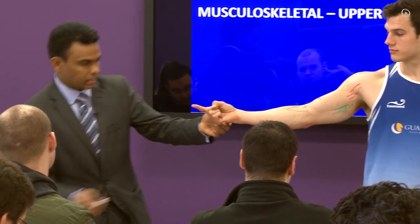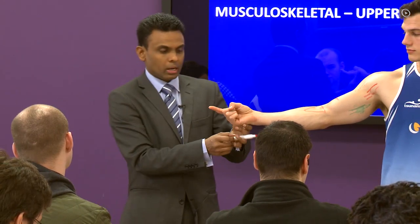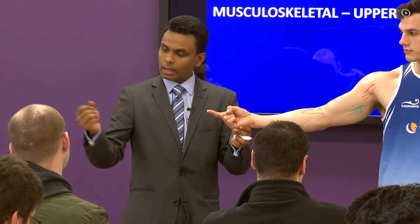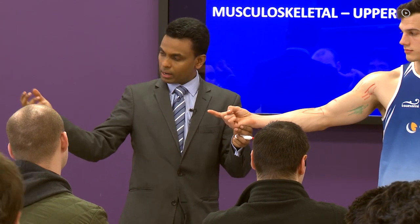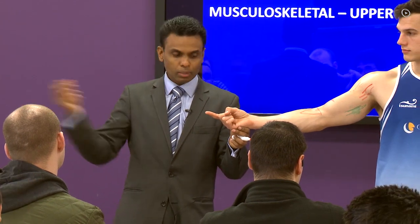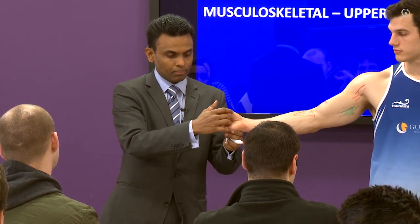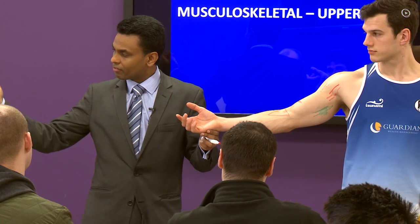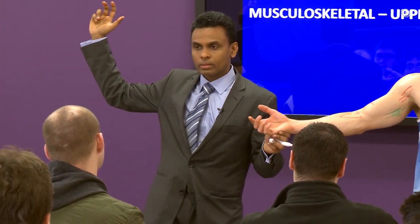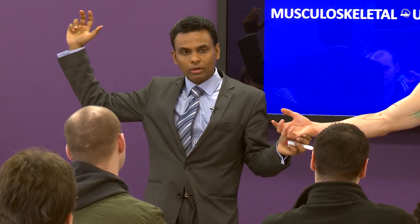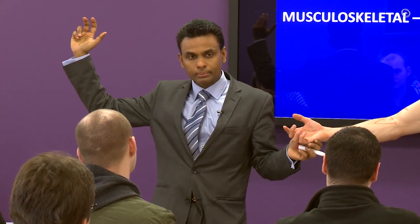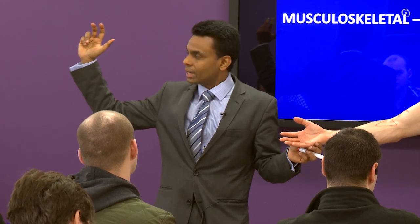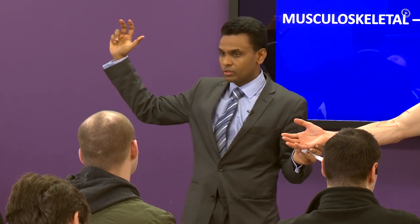In a child you can't ask them to make a fist, so that's why it presents in that position. But in an adult, if they are lying like this and you ask them to make a fist, they won't be able to make a full fist — the hand will try to flex this way. That's called the hand of benediction, and this is again a median nerve injury.